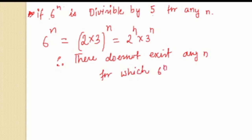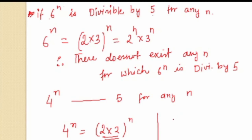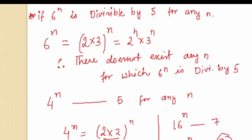Similarly, is 4^n divisible by 5 for any n? Since 4 = 2 × 2, we get 4^n = (2²)^n = 2^(2n). This factorization has no factor of 5, so 4^n is not divisible by 5 for any n. You can apply this same approach to any number — for instance, 16^n — to check divisibility by 5, 7, or other primes.